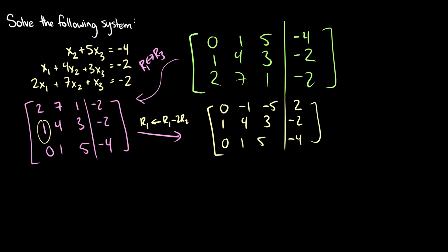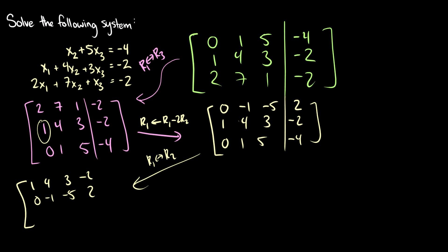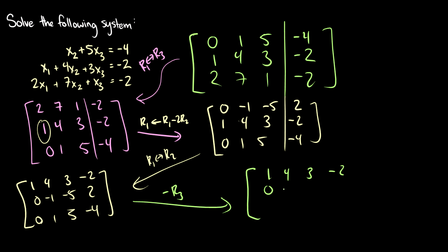That seemed a bit complicated. I want a 1 in the top position, so let's switch row 1 and row 2 — if I were smarter at first I would have swapped row 2 and row 1 originally, but it's all good. After switching: 1, 4, 3, negative 2 / 0, negative 1, negative 5, 2 / 0, 1, 5, negative 4. I already see a problem in this matrix. Let's multiply the third row by negative 1, giving row 3 as 0, negative 1, negative 5, 4.